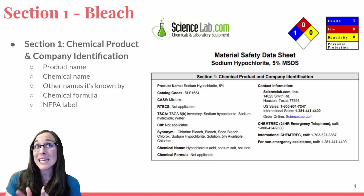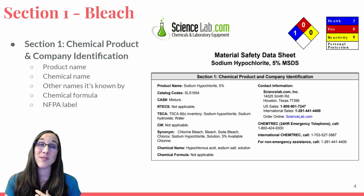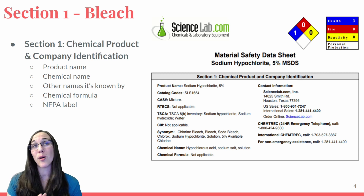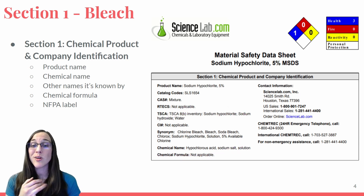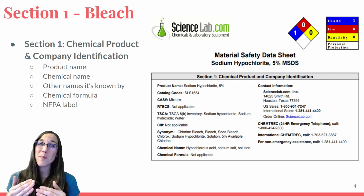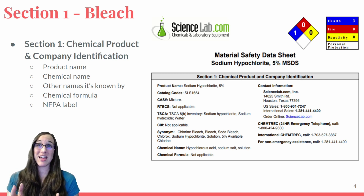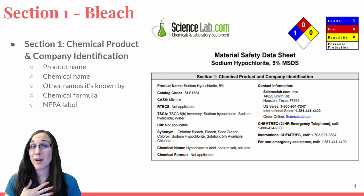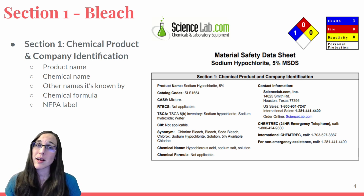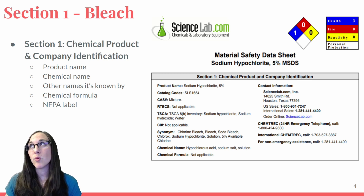In section one, you can see that bleach, as we know it, is known as sodium hypochlorite, 5%. The synonyms listed include chlorine bleach, bleach, soda bleach, Clorox, sodium hypochlorite solution of 5% available chlorine — all basically the same chemical. The specific chemical name is hypochlorous acid sodium salt solution. This particular MSDS sheet was acquired from sciencelab.com. I also recommend Fisher Scientific or other name-brand laboratories for credible MSDS information.